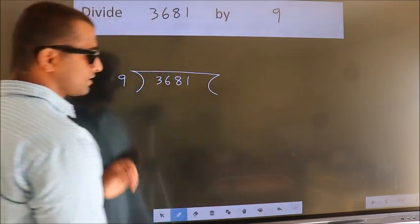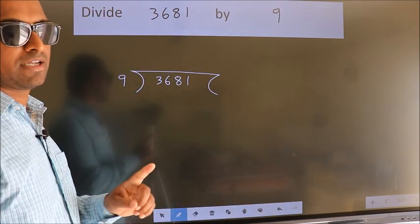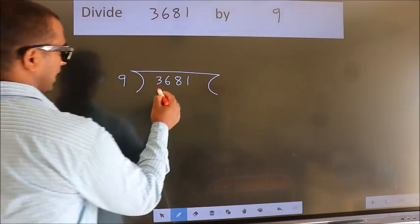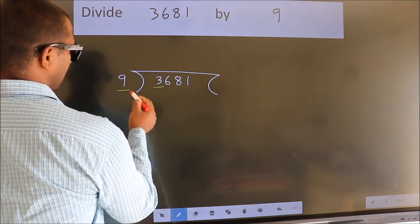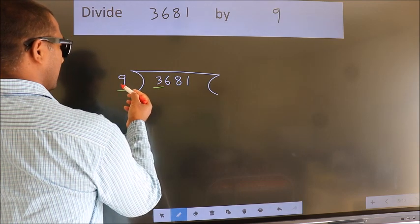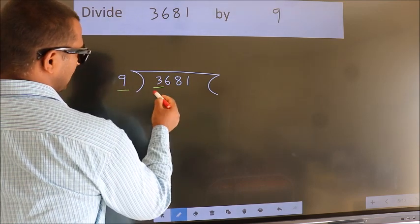This is your step 1. Next, here we have 3. Here 9. 3 is smaller than 9, so we should take 2 numbers: 36.